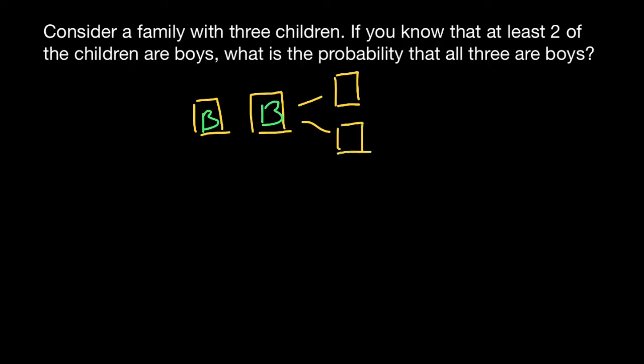And the probability that the third child is a boy would be one half, because it can be either a boy, one half or 50%, or it can be a girl, another 50% chances. And hence the answer, 50%. This is not so. Take a look.